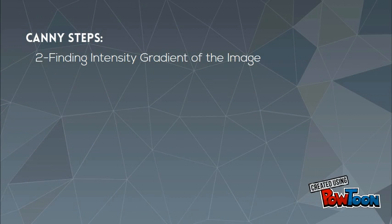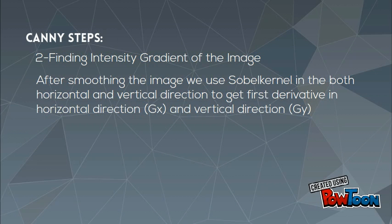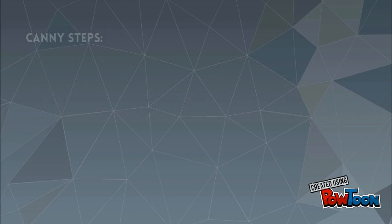The second step is finding the intensity gradient of the image. After smoothing the image, we use the Sobel kernel in both the horizontal and vertical directions to get the first derivative in the horizontal direction, GX, and vertical direction, GY.